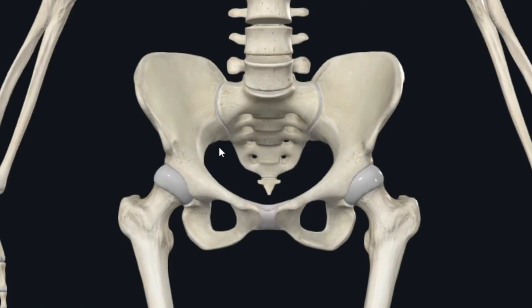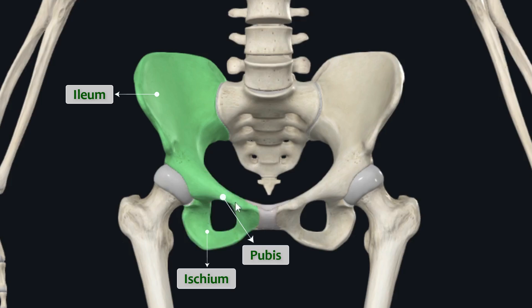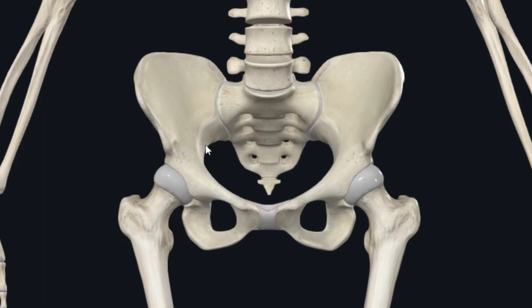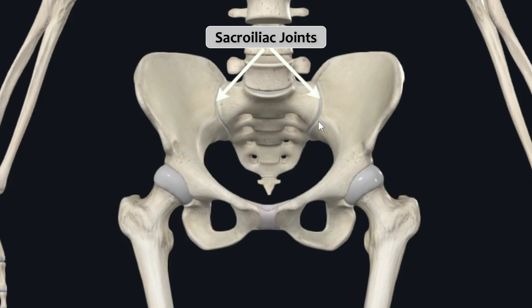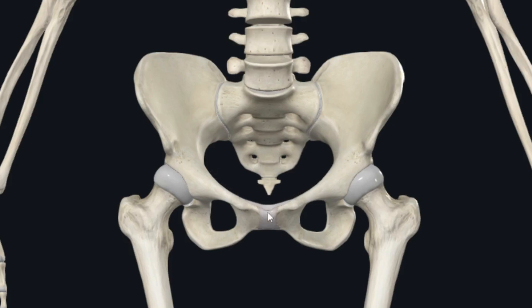Three skeletal elements — the ilium, ischium, and pubis — form the os coxae, and these three bones meet one another at the acetabulum through the Y-shaped triradiate cartilage, which we will discuss later. The os coxae articulate with the sacrum at the sacroiliac joints and form the anterolateral walls of the pelvis. These two bones also articulate with one another anteriorly at the symphysis pubis.